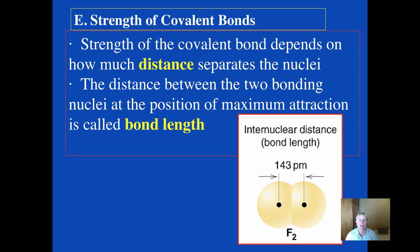Our second podcast about covalent bonding has to do with both the strength and the length of bonds that can form. The strength of the covalent bond depends upon how far apart the nuclei are of the two bonding atoms. The distance between two bonding nuclei at their position of maximum attraction is called the bond length.